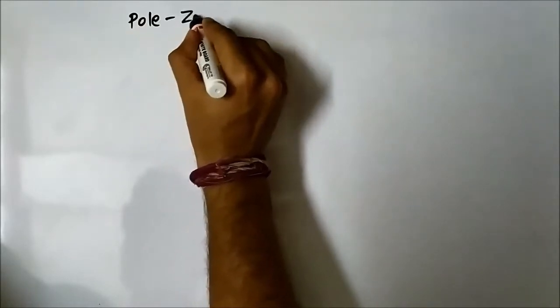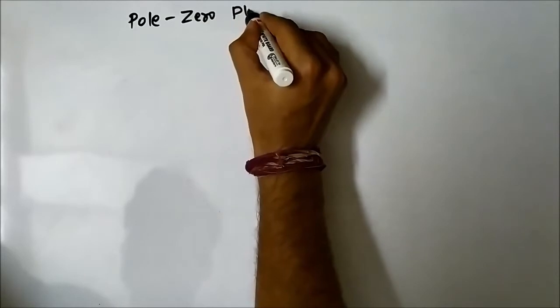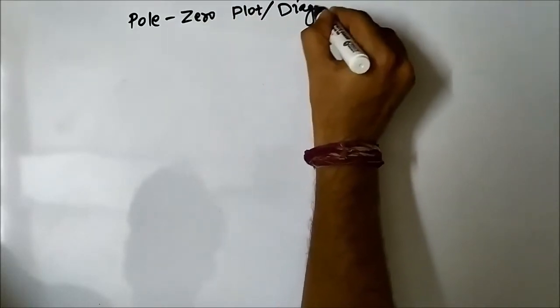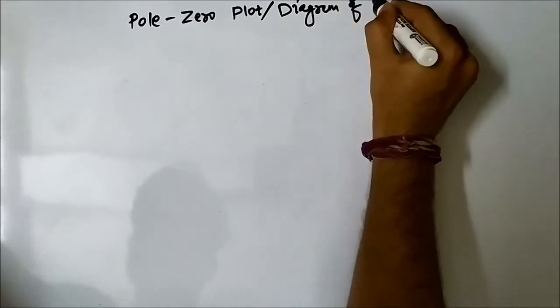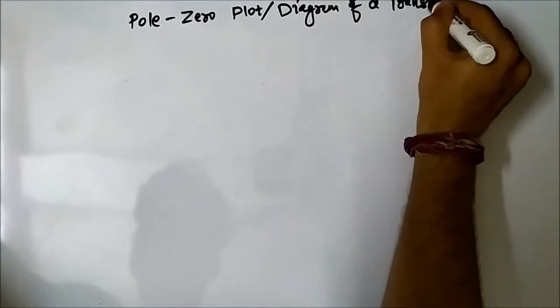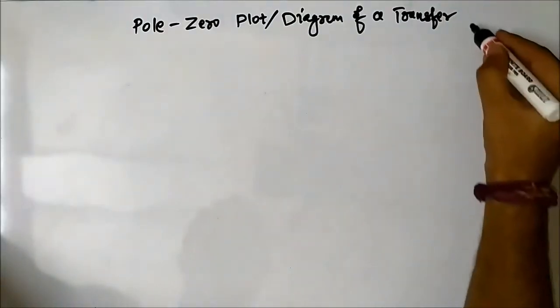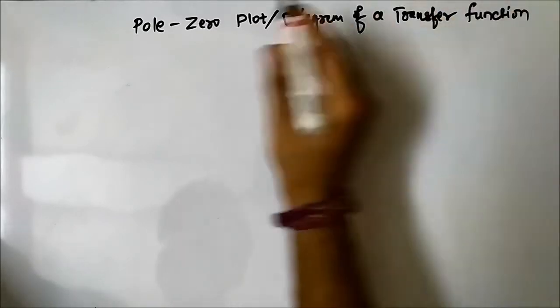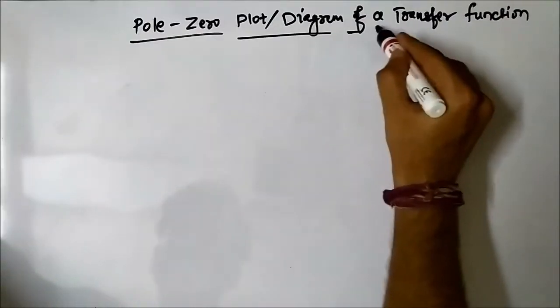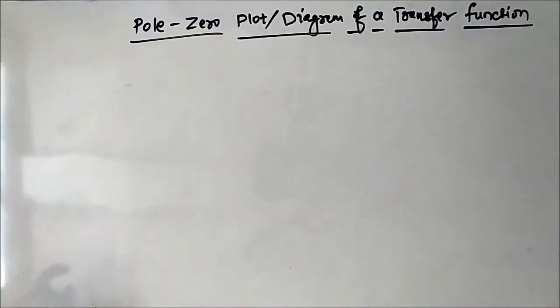Hello friends, welcome to Engineering Tutorial. In the previous video we discussed the basic concepts related to poles and zeros of transfer functions. In this video we are going to discuss another related concept: the pole-zero plot or pole-zero diagram of a transfer function. Simply, we have to plot the location of the poles and zeros of the transfer function of the system.